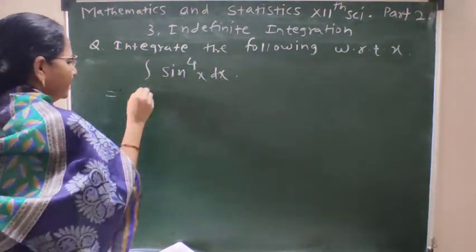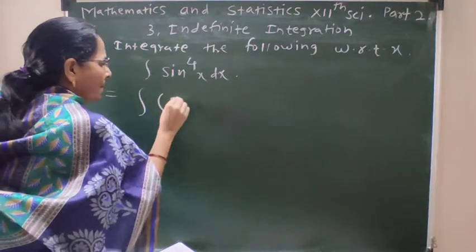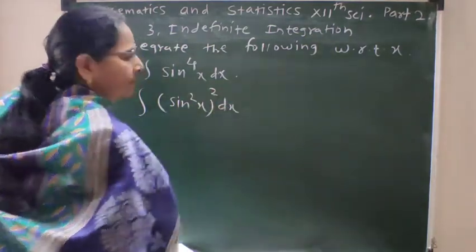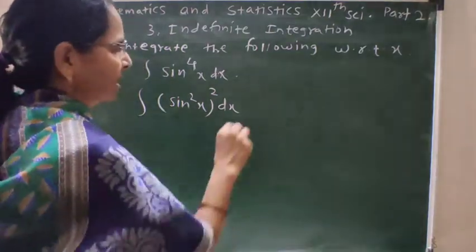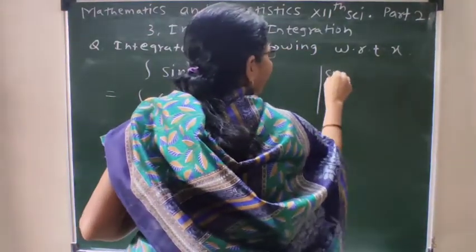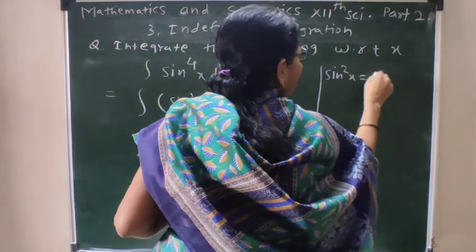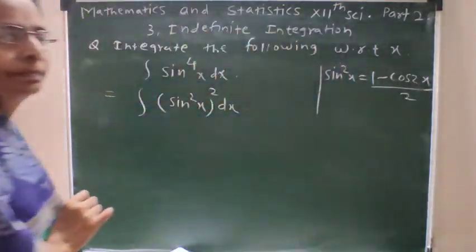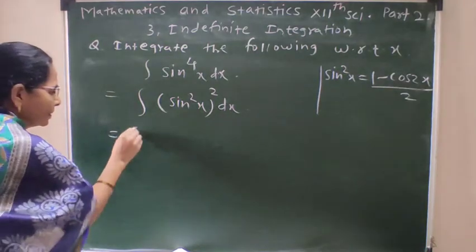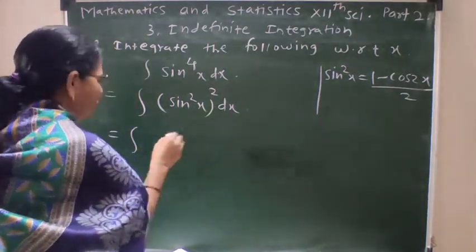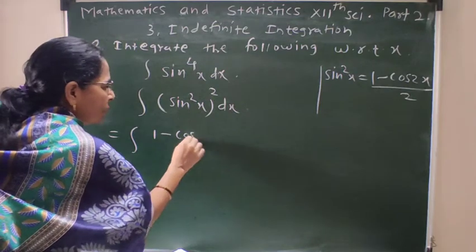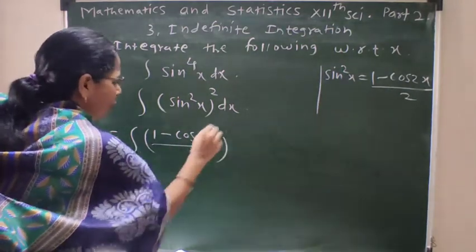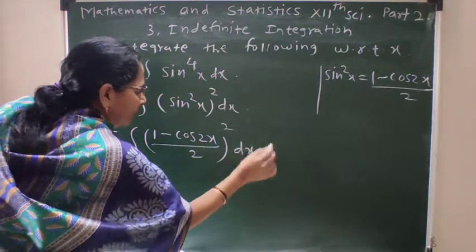This is written as the integration of (sin²x)² dx. The value of sin²x is (1 - cos2x)/2. So here, sin²x is replaced by (1 - cos2x)/2, with the whole expression squared.